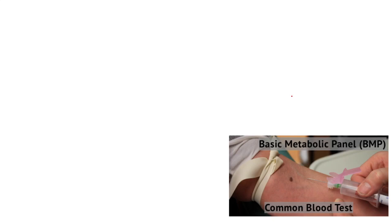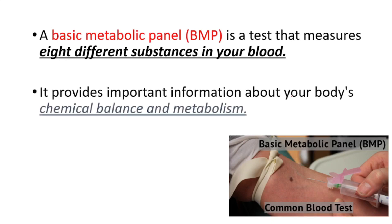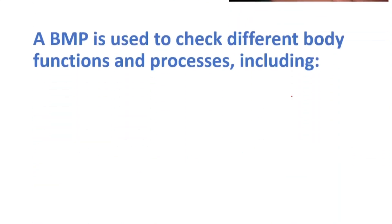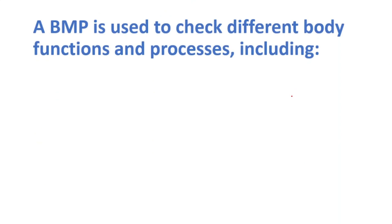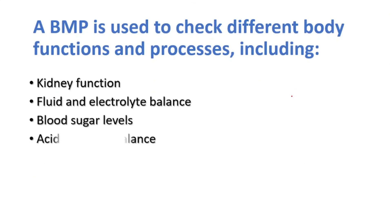In this video we will talk about the basic metabolic panel, which is a test that measures eight different substances in your blood. It provides important information about your body's chemical balance and metabolism. We use it to check different body functions and processes, including kidney function, fluid and electrolyte balance, blood sugar levels, and acid and base balance.